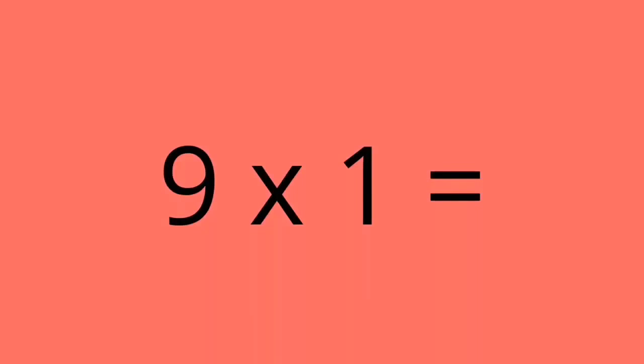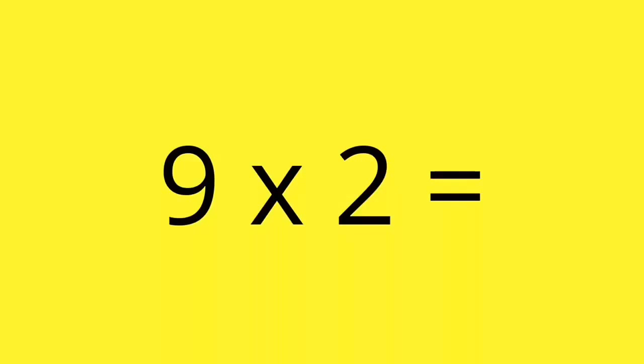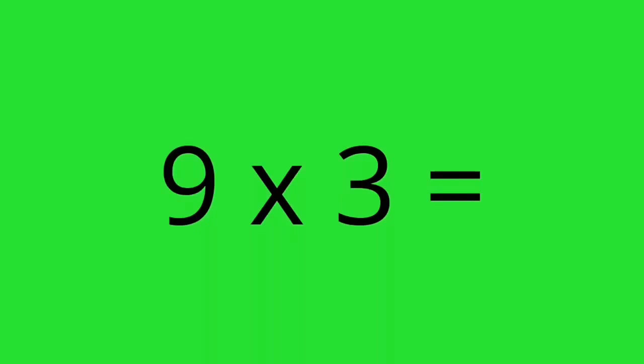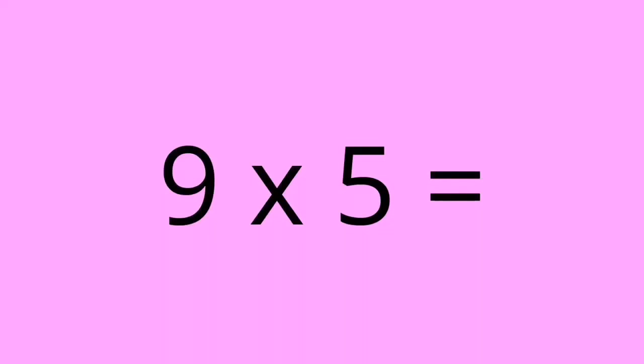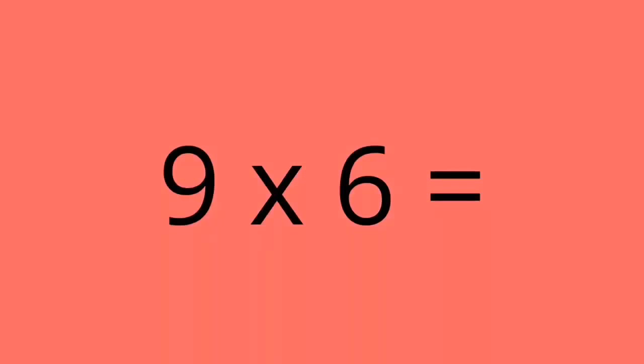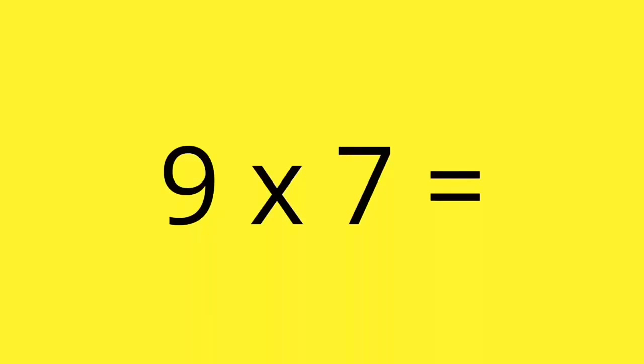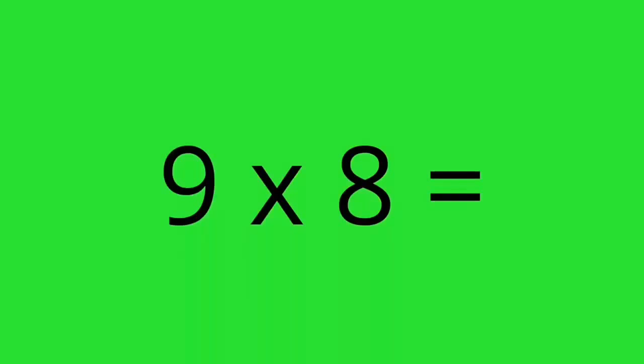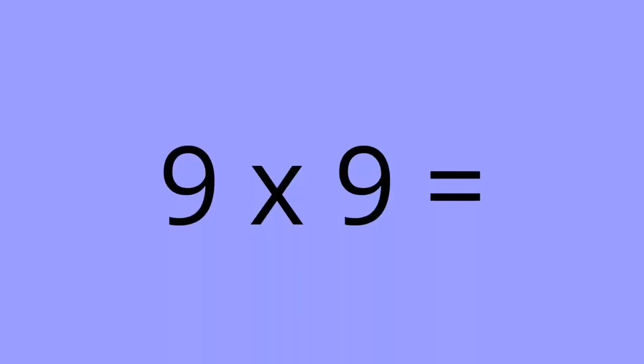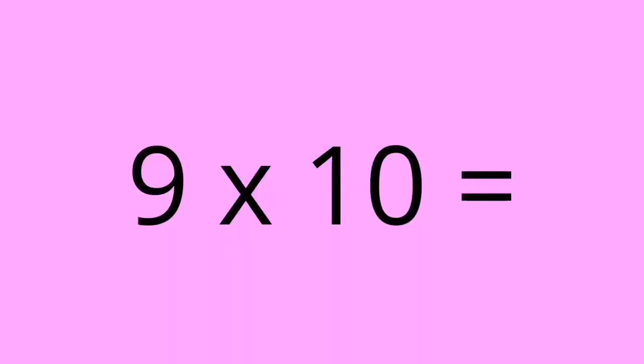9 times 1 equals 9. 9 times 2 equals 18. 9 times 3 equals 27. 9 times 4 equals 36. 9 times 5 equals 45. 9 times 6 equals 54. 9 times 7 equals 63. 9 times 8 equals 72. 9 times 9 equals 81. 9 times 10 equals 90.